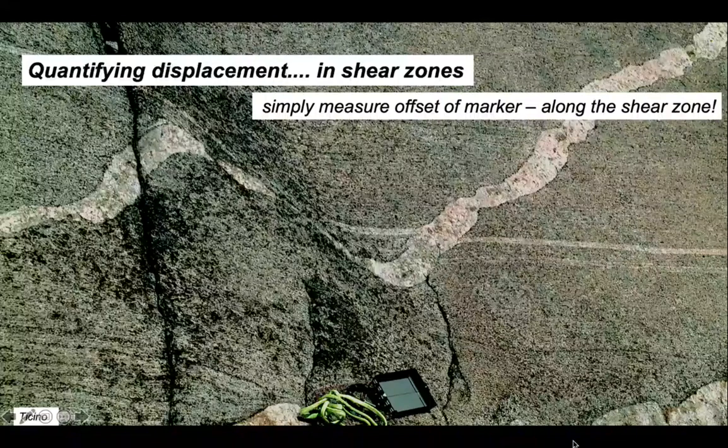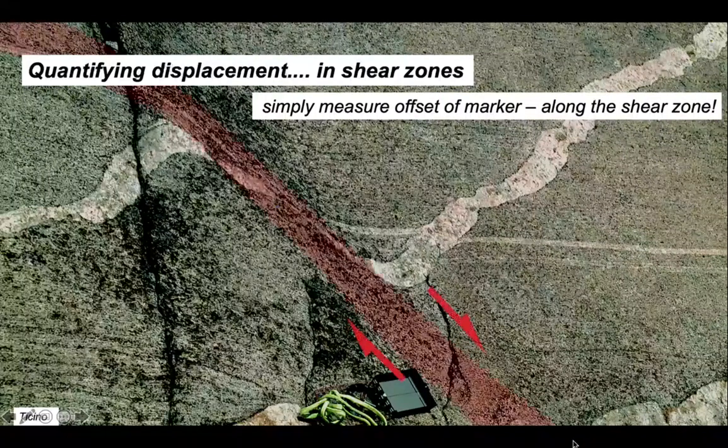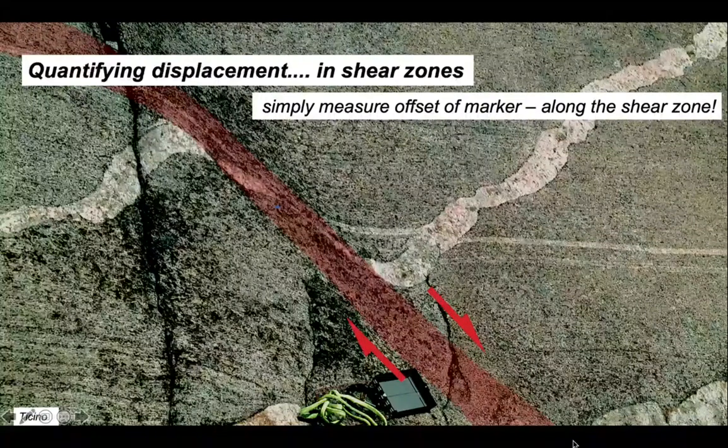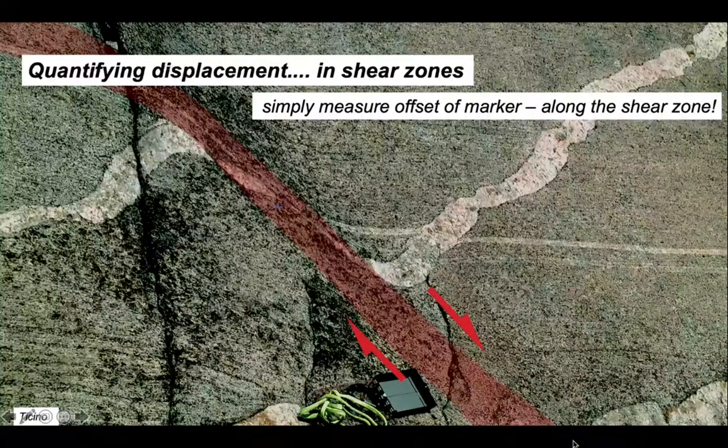So this spectacular outcrop in the Swiss Alps contains a shear zone. Here it is, the zone of intense deformation. We can see that that pale aplite band has been offset in the sense picked out by the arrows, so the shear zone has moved down and to the right.